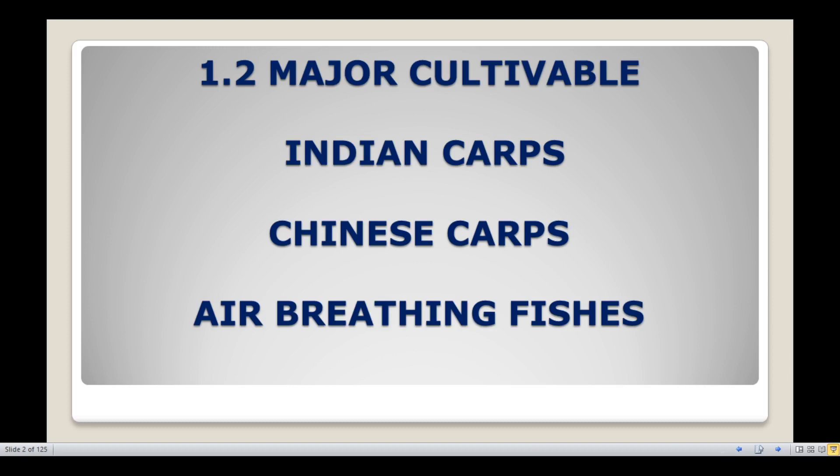In the last class, I had discussed about major cultivable Indian carps, Katla and Cirrhinus mrigala. Today in this session, I am going to discuss about the remaining one, Labeo rohita.